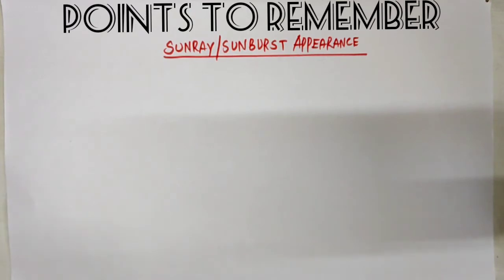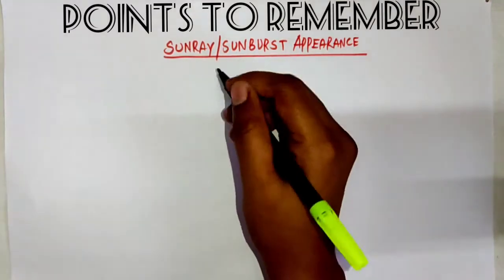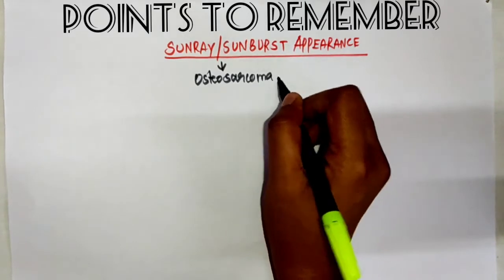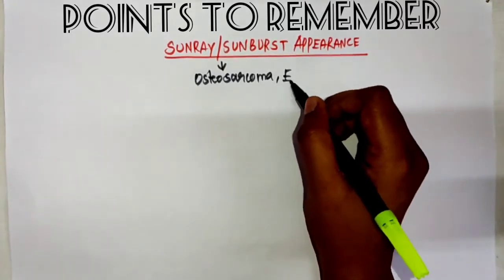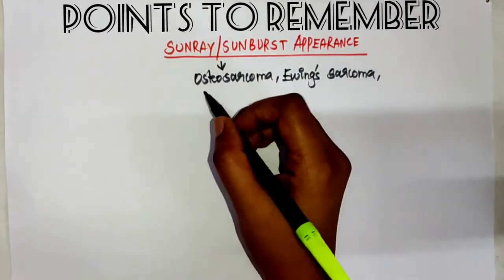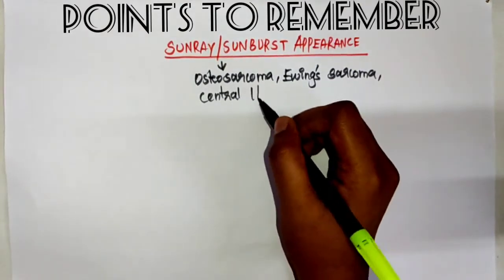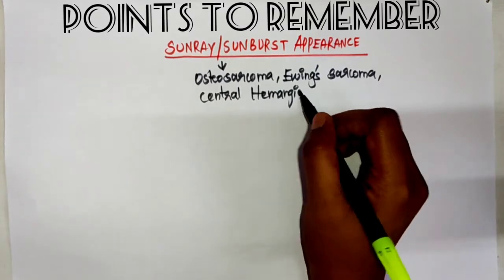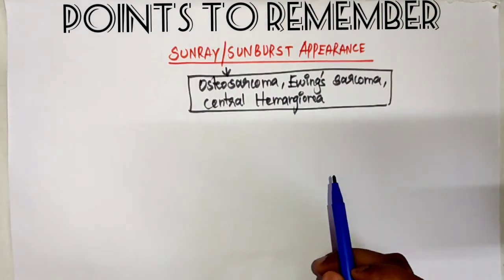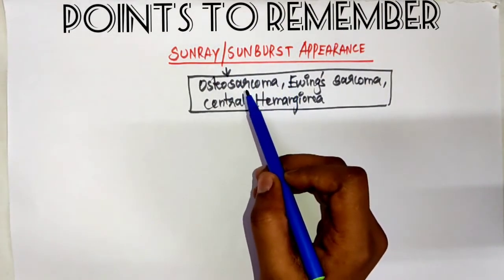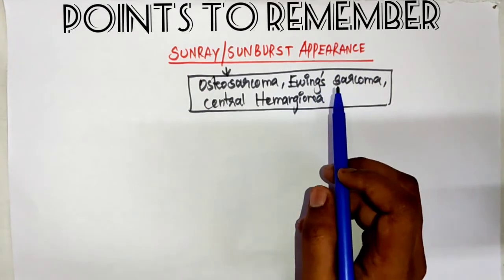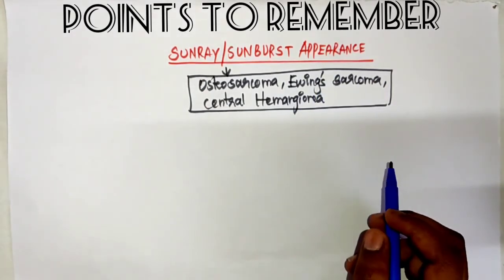This appearance is seen in osteosarcoma, Ewing's sarcoma, and also central hemangioma. You need to remember these three. The sunray or sunburst appearance is most commonly seen in osteosarcoma, Ewing's sarcoma, and central hemangioma.